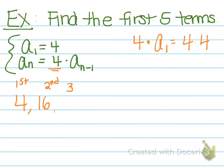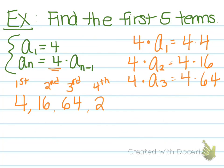Then if I wanted to find my third, it would be 4 times a sub 2 because it's a sub 3 minus 1 which is a sub 2 and we just found a sub 2 which is 16 so now it's 4 times 16 which is 64. So the fourth term, which would be 4 times a sub 3, is going to be 4 times 64 which is 256 and then our fifth term is going to be 4 times 256 which is 1024.